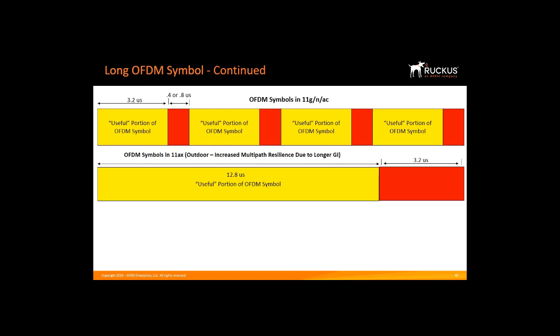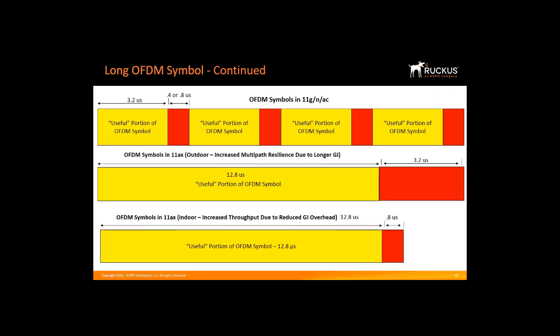How does this longer OFDM symbol affect indoor deployments? We know that indoors we don't need a long guard interval, so we combine the best of both worlds. We use the long OFDM symbol but keep the red portion short for indoor use. This decreases overhead because we have a much longer yellow portion followed by a small red. Originally, we had 3.2 microseconds of data followed by 0.8 microseconds of overhead, representing a 20% overhead. Now with 11AX indoors, we have 12.8 microseconds of data followed by a 0.8 microsecond guard interval, meaning overhead has come down to less than 10%, providing a throughput benefit.